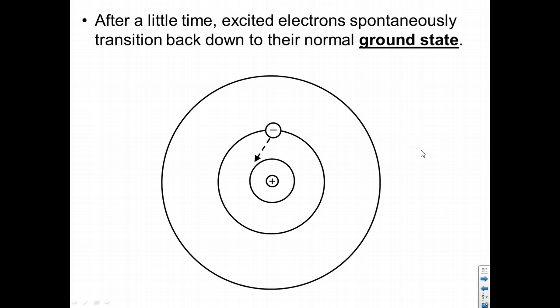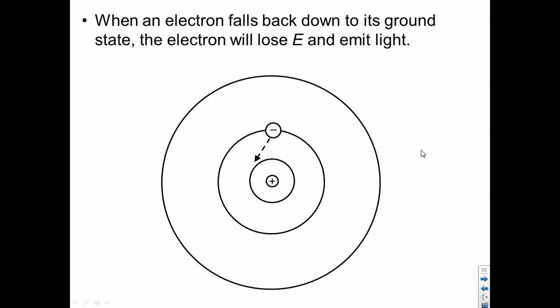And of course, when it falls back to its ground state, the electron is losing energy, and energy can't actually be lost. It can only be converted to other forms.